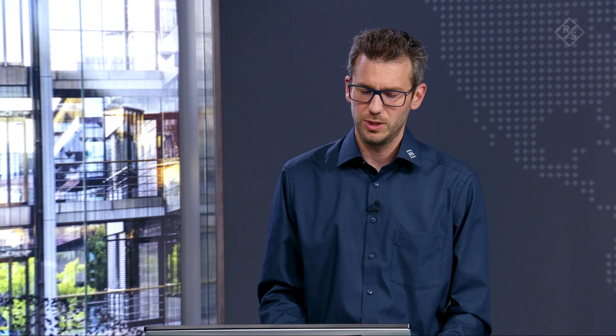So how has material characterization been performed so far? Either the quasi-optical approach or waveguide-based setups were used. The quasi-optical setup is shown as a photograph on the left-hand side and as a schematic drawing on the right-hand side. We have the corrugated horn antennas, the mirrors to focus the beam, and a very small sample holder where we can position our samples. This is the most precise setup available for such measurements.